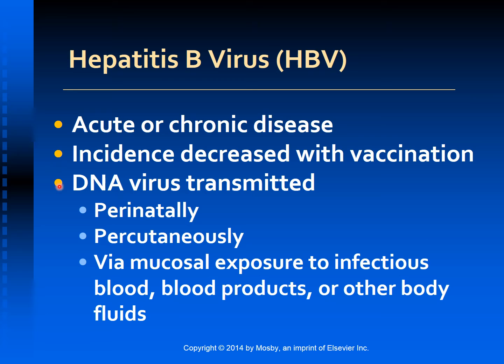Hepatitis B is a DNA virus. It can be transmitted perinatally by infected mothers, percutaneously through IV drug use, accidental needle stick punctures, or by mucosal exposure to infectious blood, blood products, or other body fluids like semen, vaginal secretions, and saliva. Hepatitis B surface antigen (HBsAg) has been detected in almost every body fluid. Infected semen and saliva contain much lower concentrations of HBV than blood, but the virus can be transmitted via these secretions. If GI bleeding occurs, feces can be contaminated with virus from the blood. There is no evidence that urine, feces without GI bleeding, breast milk, tears, and sweat are infected.